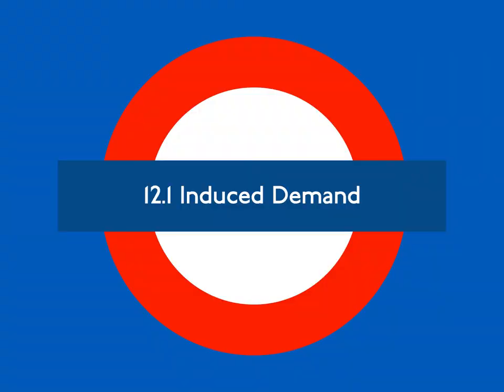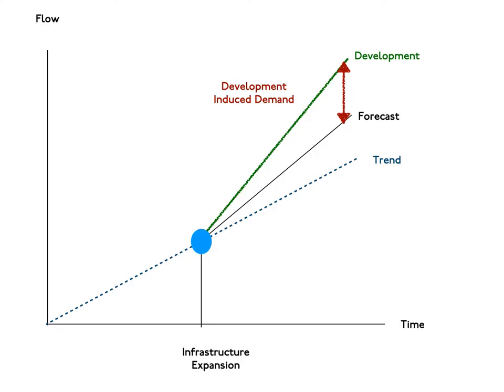12.1 Induced Demand. Increasing capacity seldom reduces congestion as much as expected. You already have a congested roadway and transport planners predict even more traffic in the near future. What do you do? For most of the last century, the answer was to increase capacity. In the short term, this seemed to work. But time and time again over the long term, the actual amount of traffic after the capacity increase grew far more than expected, as illustrated in Figure 12.2.